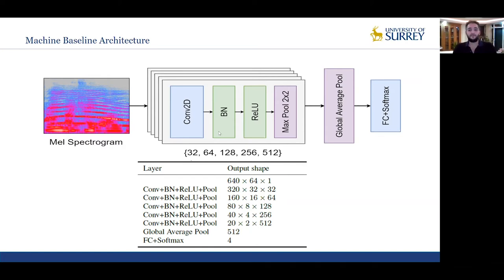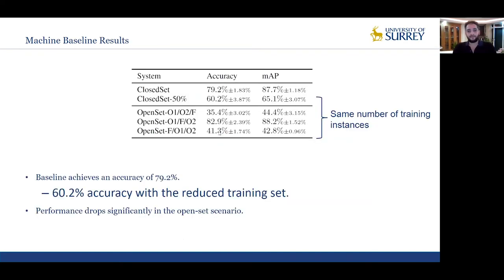As a result, the computational demands and memory requirements are relatively low. The obtained performances of the CNN classifier are summarized here, with results divided into open and closed set scenarios. In the closed set scenario, the training, validation, and test sets are sampled from the same distribution — specifically, they all contain audio clips from all three recording locations.